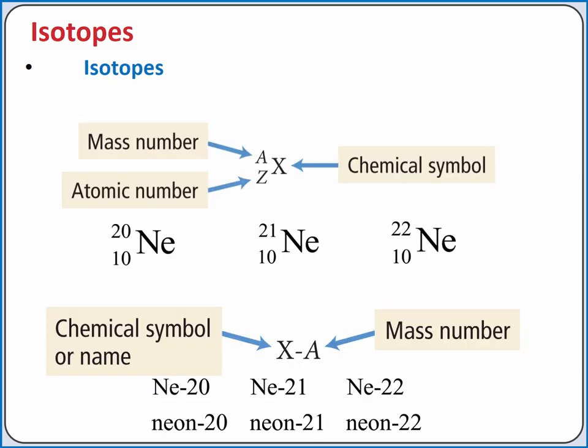The number of protons in an atom defines the element. Two atoms of the same element with different numbers of neutrons are called isotopes. We can represent isotopes in a few different ways. One way lists the mass number as the superscript and the atomic number as a subscript to the left of the chemical symbol. Sometimes the atomic number is also left off in this notation, since the chemical symbol can be used to determine the number of protons in the atom from the periodic table.